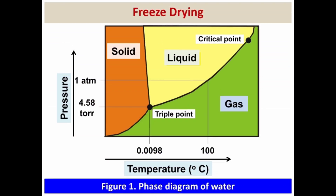This figure shows the phase diagram of water. If you look at it, you will see the triple point at a pressure of 4.58 Torr and a temperature of 0.0098 degrees Celsius. As we know, the triple point is the point where water can exist in all three forms. Also, at the top right corner of the figure you will see the critical point of water.